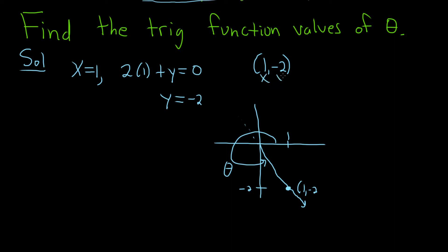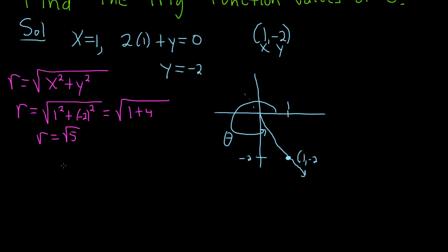Recall that r is equal to the square root of x squared plus y squared. So r equals the square root of—if x is 1, we get 1 squared plus, and y is negative 2, so this is negative 2 squared. This equals the square root of 1 plus 4, so r equals the square root of 5. Now that we have r, we can find our answers.